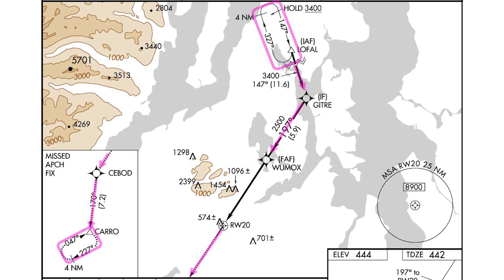In other words, to fly the RNAV GPS approach, you need an IFR-approved GPS that can provide guidance within 1 nautical mile to fly the intermediate segments, the missed approach path, and the holds defined for this approach. And along final, your GPS navigator — formerly known as a suitable RNAV system — must be capable of keeping you within at least 0.3 nautical miles of the leg between the final approach fix and the missed approach point.